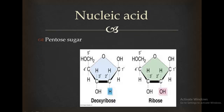Let's look at pentose sugar. Pentose sugar is a five-carbon sugar — carbon one, two, three, four, and five. It is a five-carbon sugar.